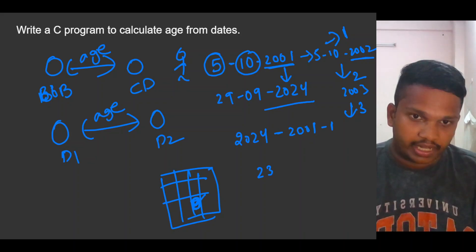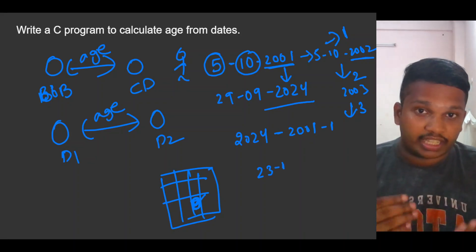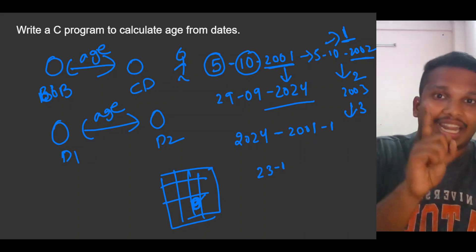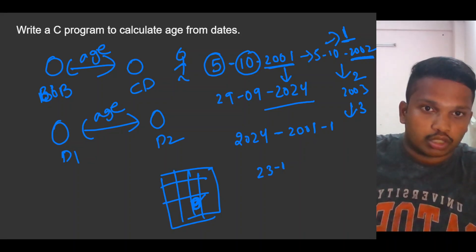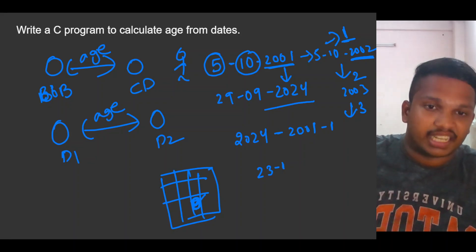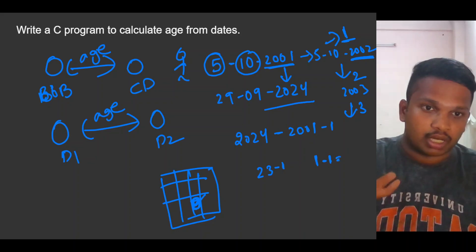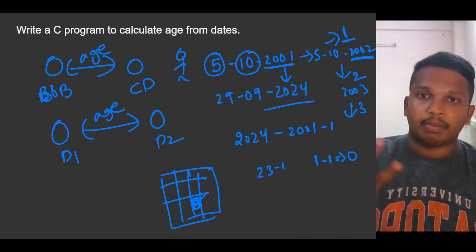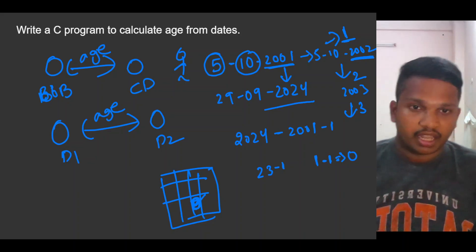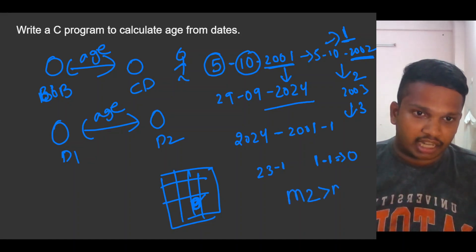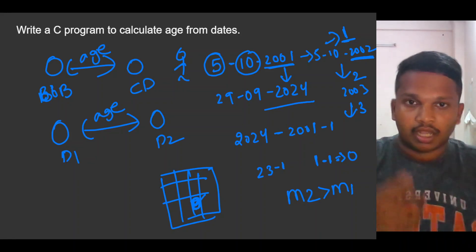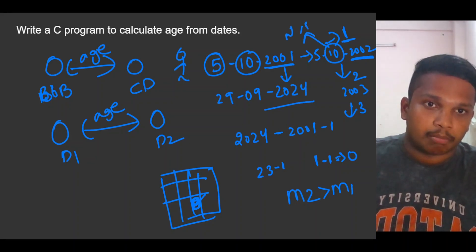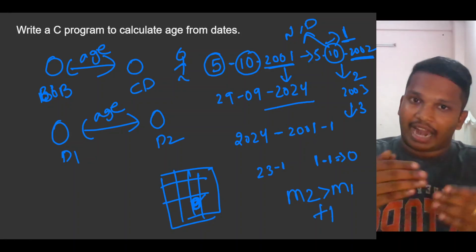Similarly, decrease one. We need to check: if he has born on 5th October and he had crossed 5th October, then only he should get one as age. For example, 2002 minus 2001 is one, then decrease one, so age is zero at present. If he crossed October — meaning he's in November or December — if month two is greater than month one, then add one.